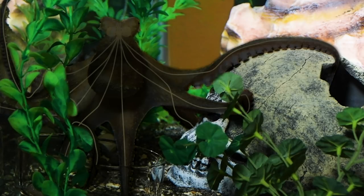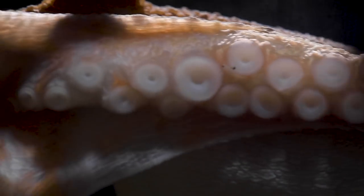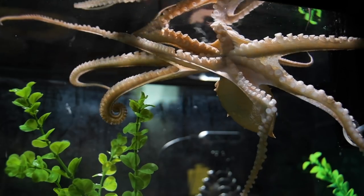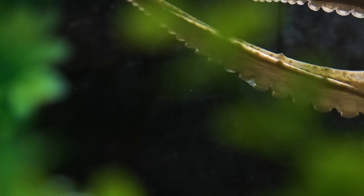The octopus brain is distributed with two-thirds of its neurons in its arms. There's actually this dense network of neural clusters, or ganglia, that are locally controlling the muscles. So you can have a bunch of little individual decisions being made along the arm, which don't necessarily agree with each other. This creates a unique form of movement that the octopus is able to possess.